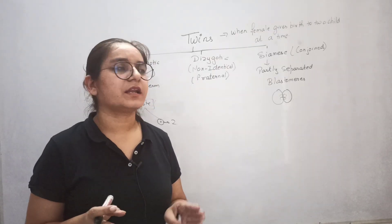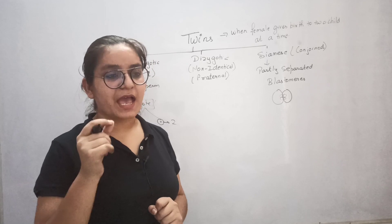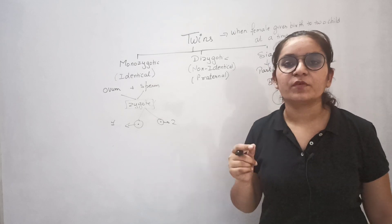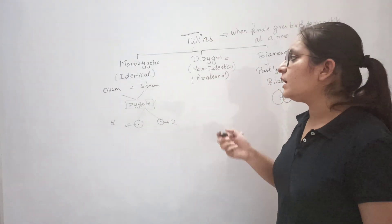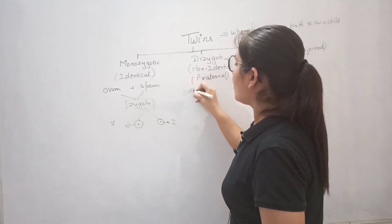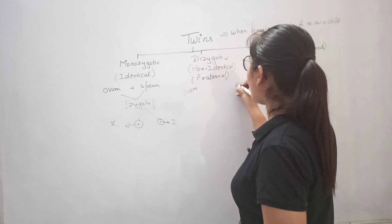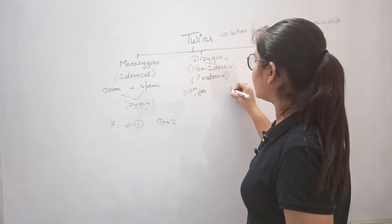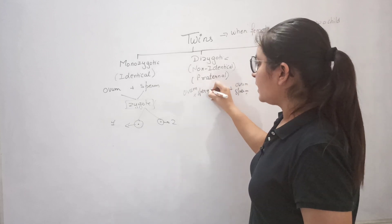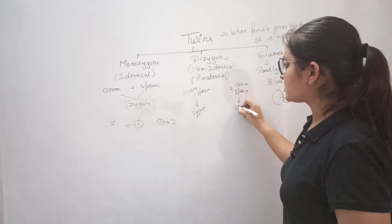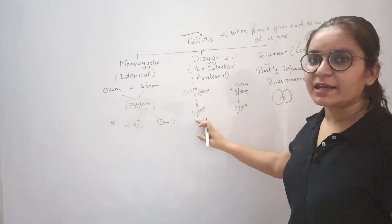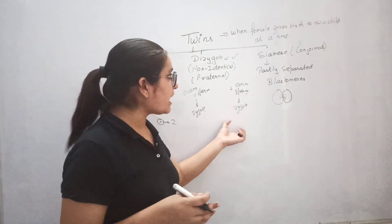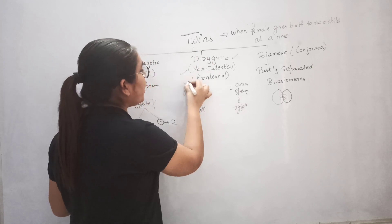This problem generally does not occur in dizygotic twins. What are dizygotic twins? As you know, a female normally produces only one ovum from one ovary alternatively in 28 days. But due to some abnormality, if both ovaries of the female produce an ovum at the same time, two ovums are produced. Sperms are always present in abundance, so each ovum is fertilized and two zygotes are produced — that is why they are called dizygotic twins. One can be male and another can be female, or both male or both female. But they do not have the same characters because they are produced from different zygotes, and that is why they are called non-identical or fraternal twins.